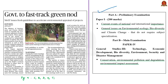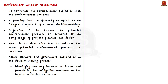Every anthropogenic or human activity has some impact on the environment — more often harmful than beneficial. However, these activities must be done for the food security and other needs of humans. Consequently, there is a need to harmonize developmental activities with environmental concerns. Environment Impact Assessment is one of the tools available with planners to achieve this harmonization. EIA is a planning tool and is generally accepted as an integral component of a sound decision-making process.